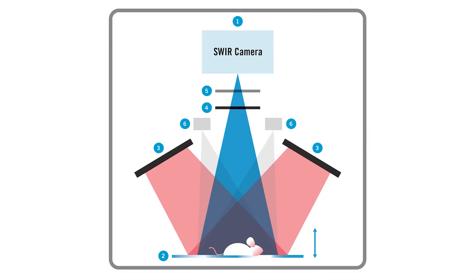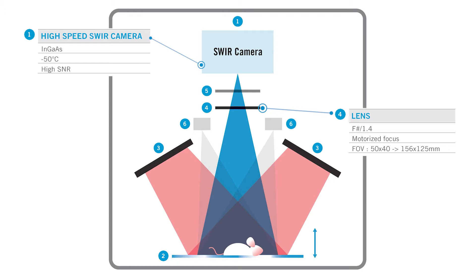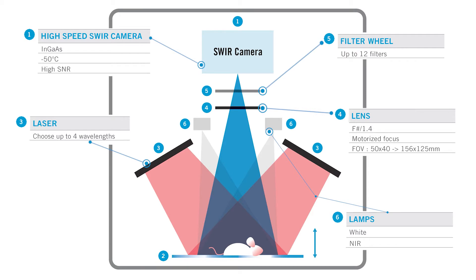Basically the system is an infrared camera with some optics, an illumination module, a filter wheel and a motorized stage to put the animal in a light tight box.